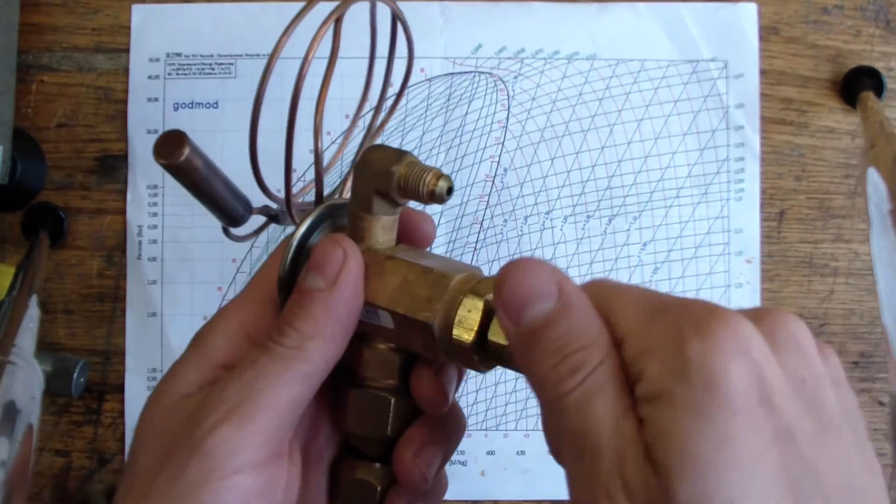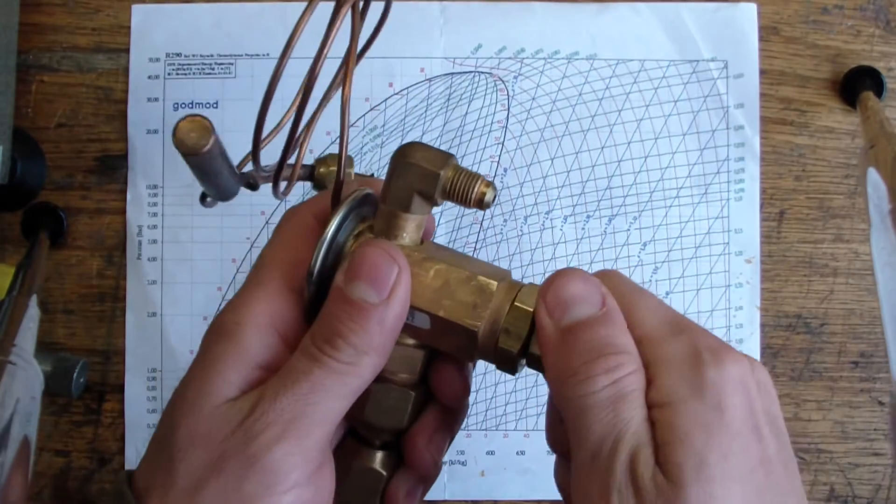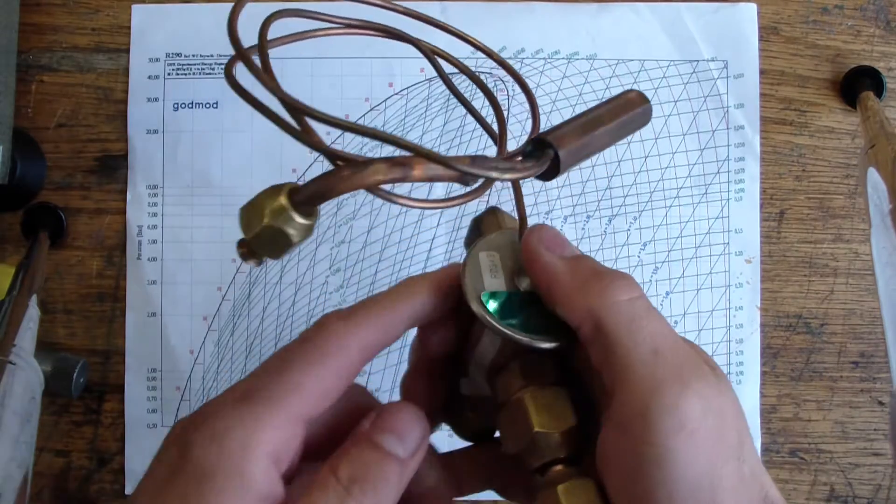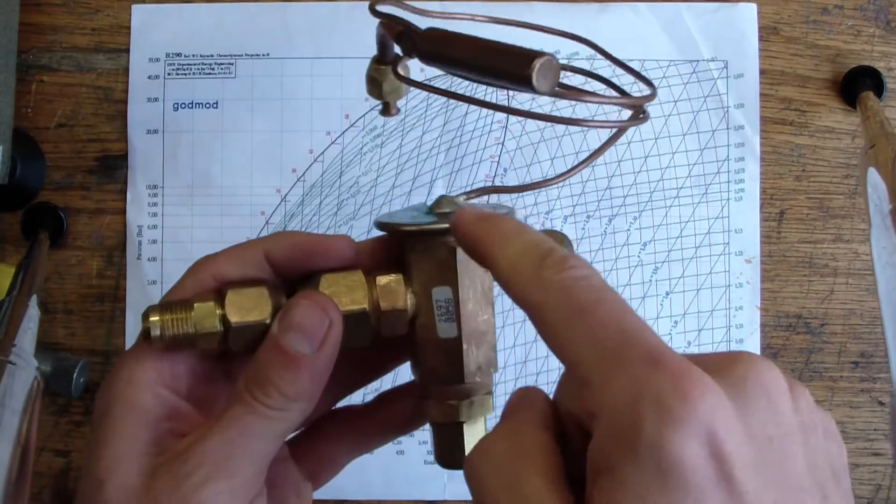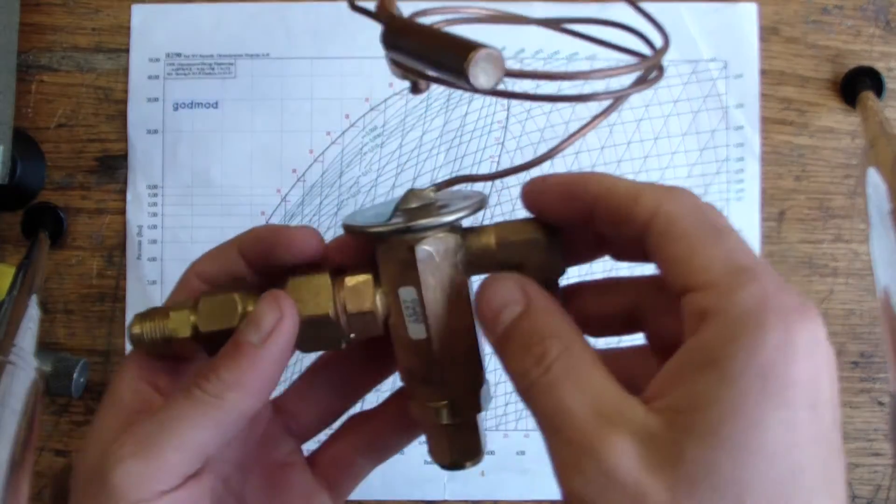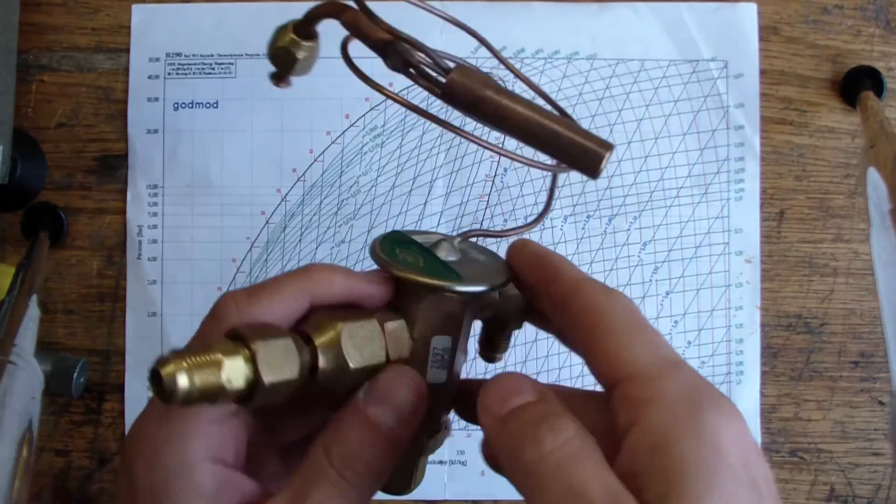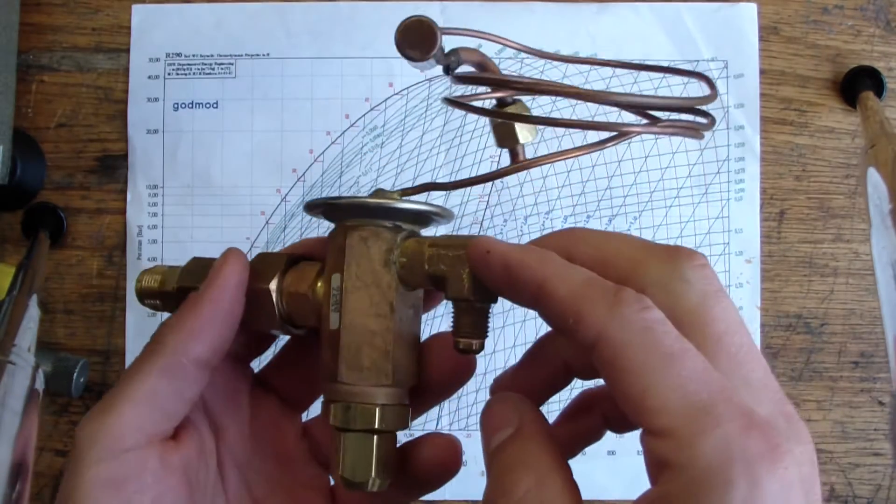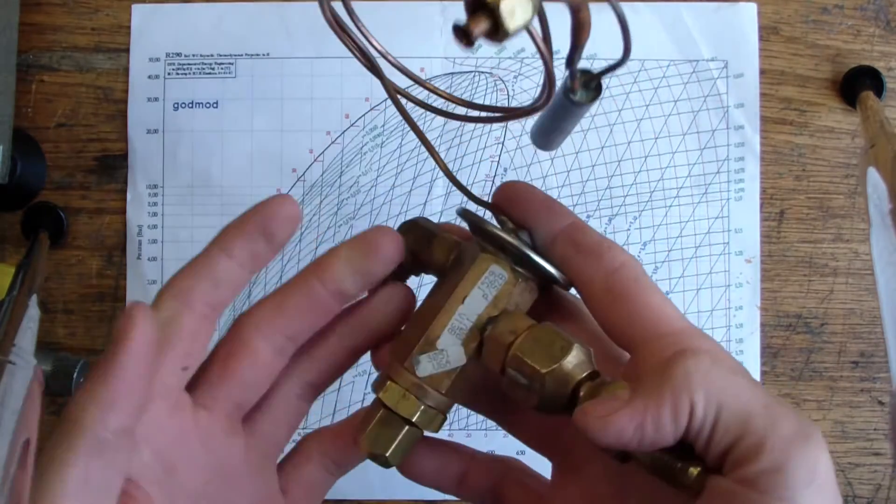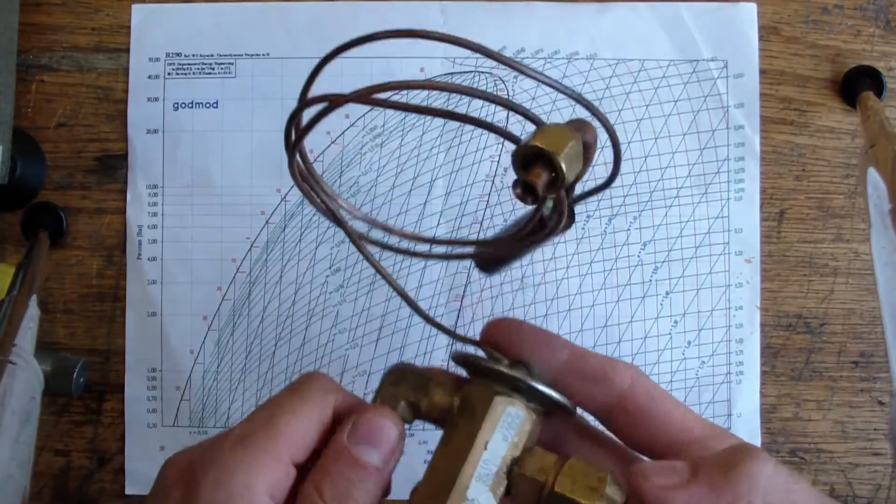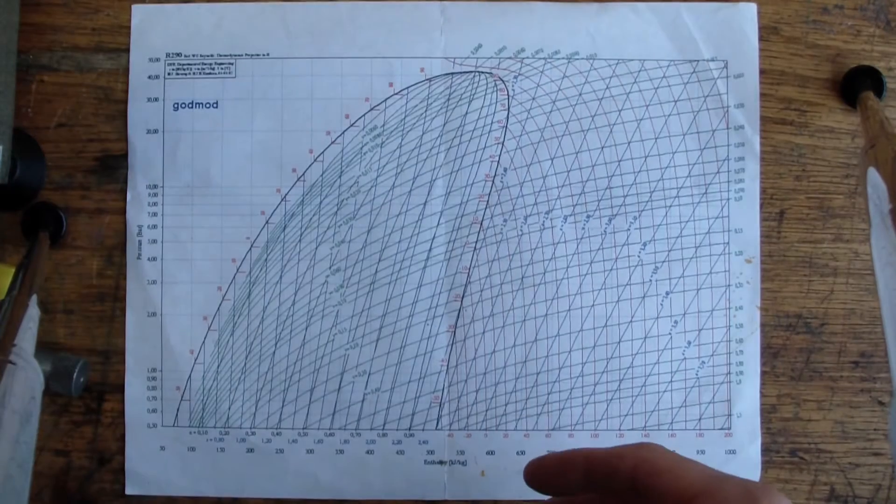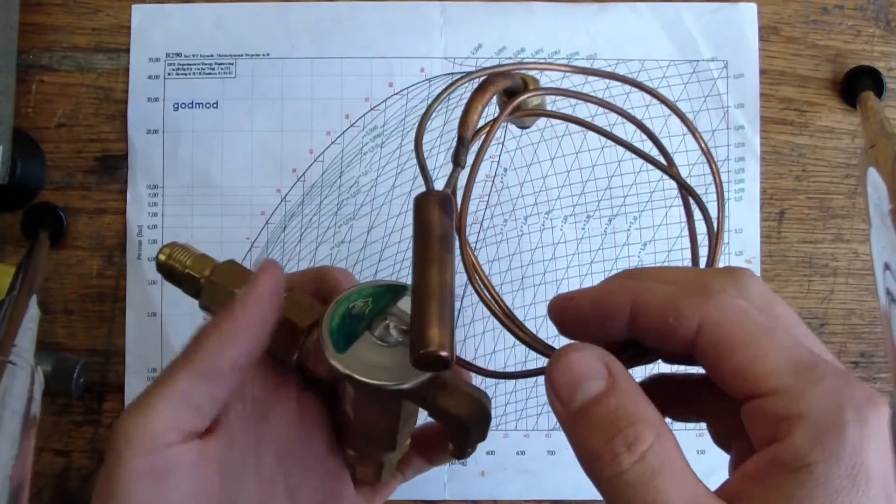Not all TXVs will have a control like this, adjustment like that. Some have other features. Some allow you to change the diaphragm head without actually tearing into the entire system. This one's completely fixed. But I don't know a whole lot about TXVs. I'm not a refrigeration guy. Like I said, this one's about a quarter ton.